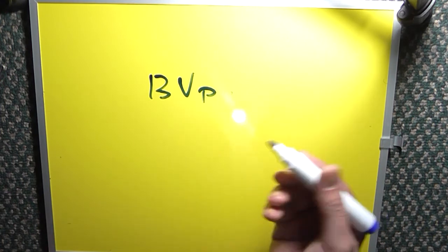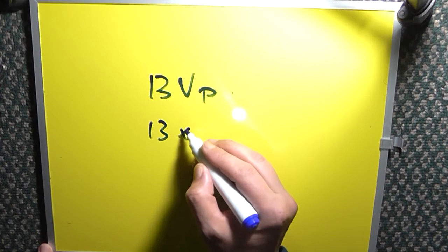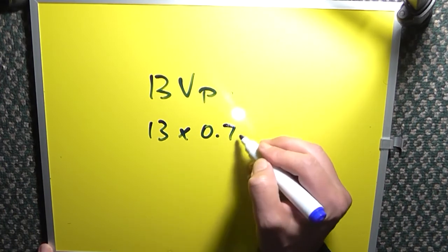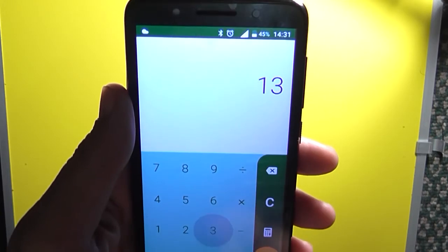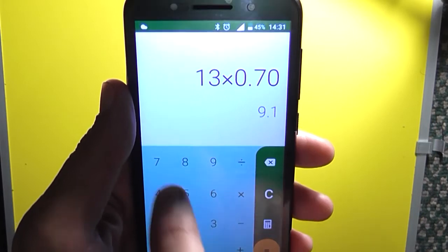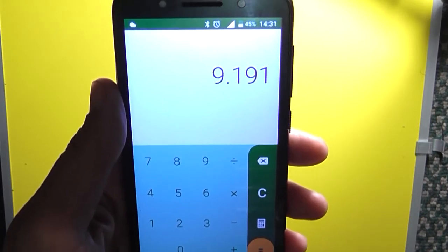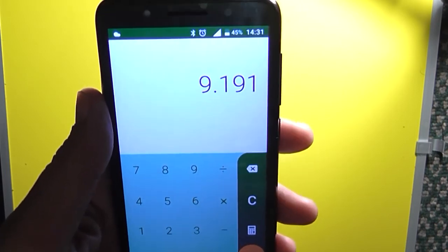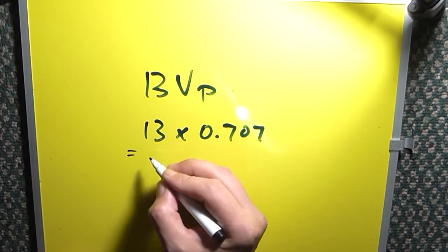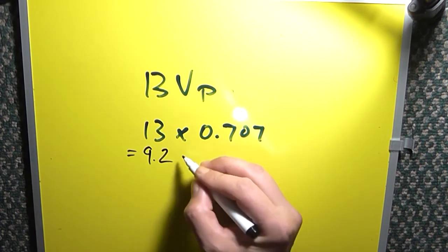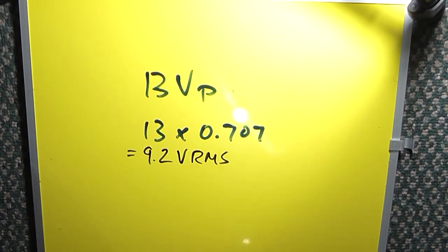That is just an easy calculation. We can go: 13 volt multiplied by 0.707 — don't ask me why it's that number, it just is. So 13 multiplied by 0.707 gives us 9.19, so we'll say 9.2. That would be 9.2 volt RMS. So from 13 volt peak, the RMS value is 9.2 volt RMS.